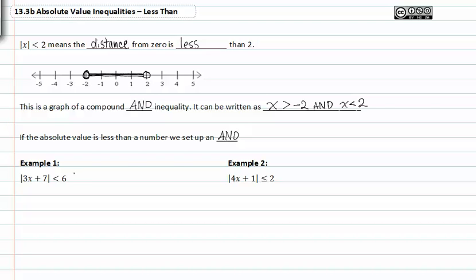In example one, we have the absolute value of three x plus seven less than six. So we have to set up an and inequality.